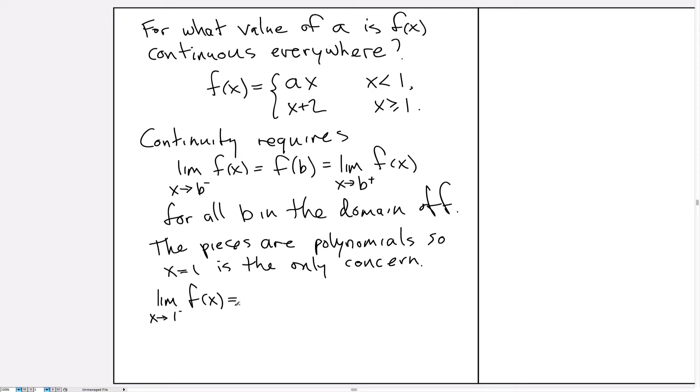So instead of writing limit as x approaches 1 from the minus side, we can just write the limit as x approaches 1 and now fill in the formula for the value of f on the minus side. And now that's just a continuous function. So if I'm just coming from the left side, I know that this will evaluate to a. That's not actually the value of the function. That's the limit as I get closer to x from the left hand side.